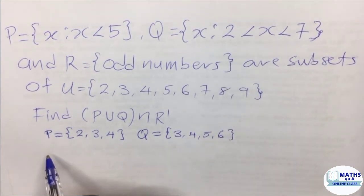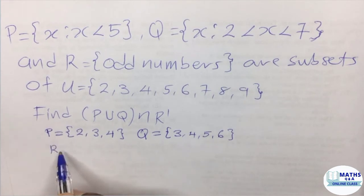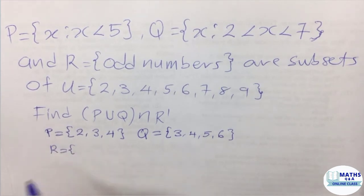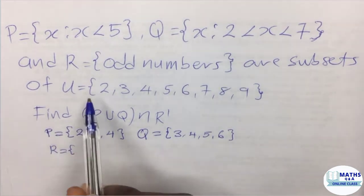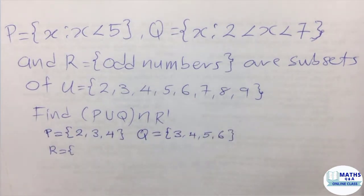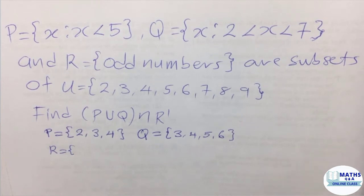Now, let's look at the set R. The set R is the set of odd numbers. Going back to the universal set, the set of odd numbers are numbers that cannot be divided by 2. When we divide it by 2, we're going to get a remainder.